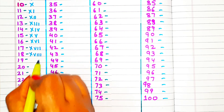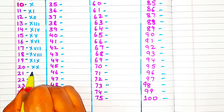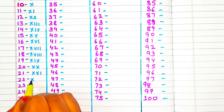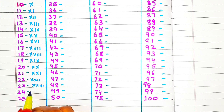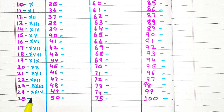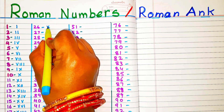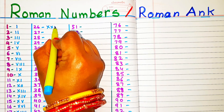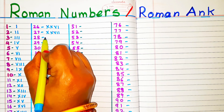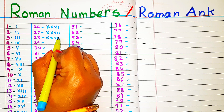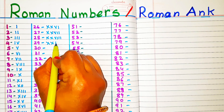19: XIX. 20: XX. 21: XXI. 22: XXII. 23: XXIII. 24: XXIV. 25: XXV. 26: XXVI. 27: XXVII. 28: XXVIII. 29: XXIX. 30: XXX.